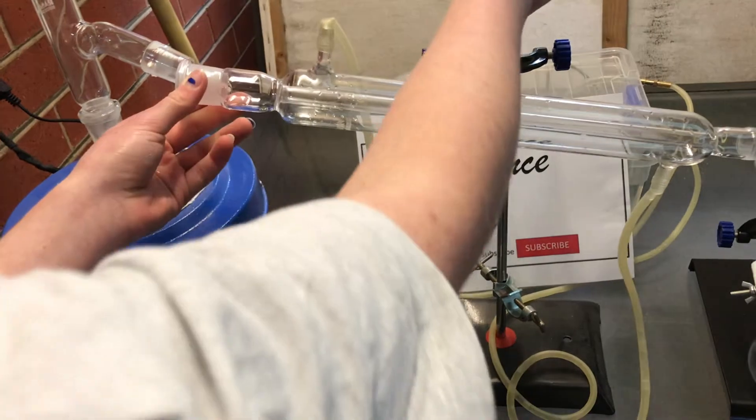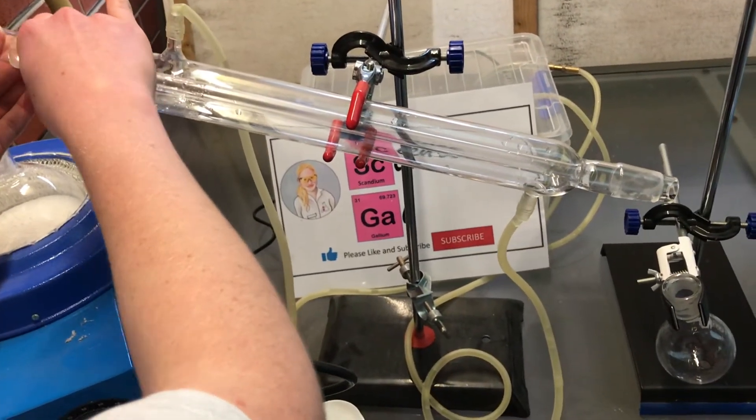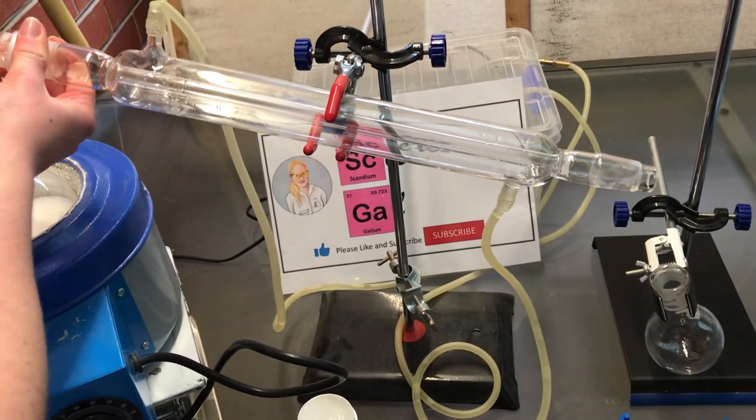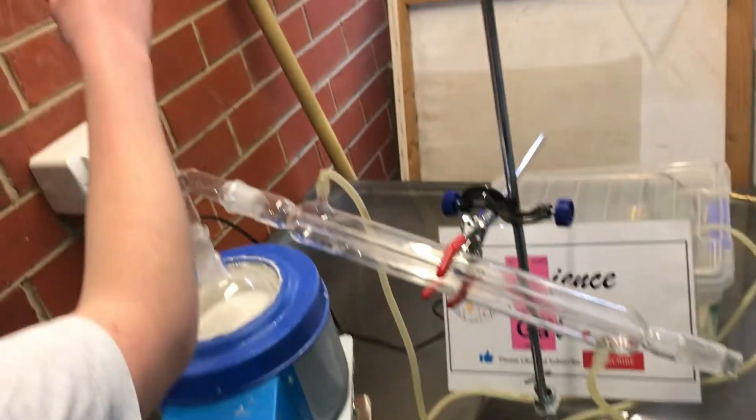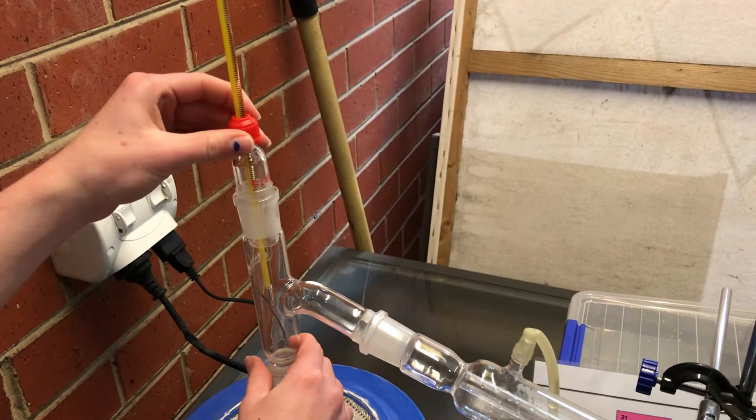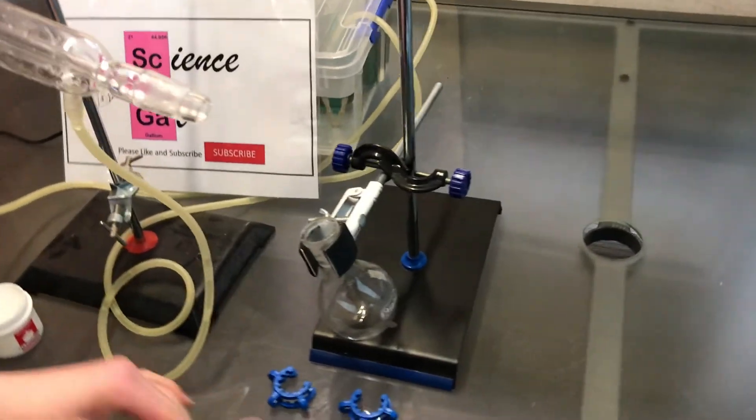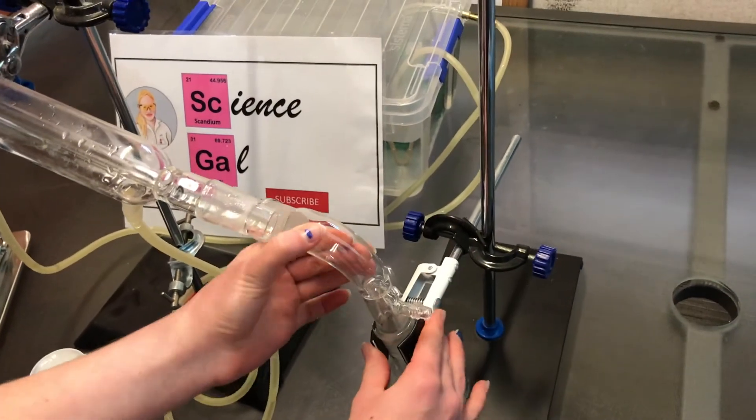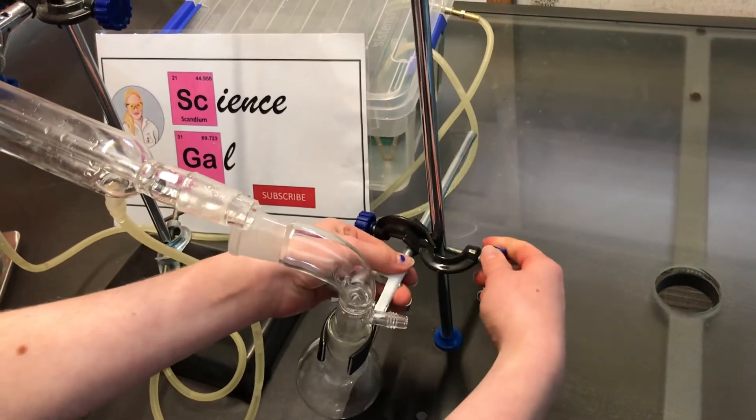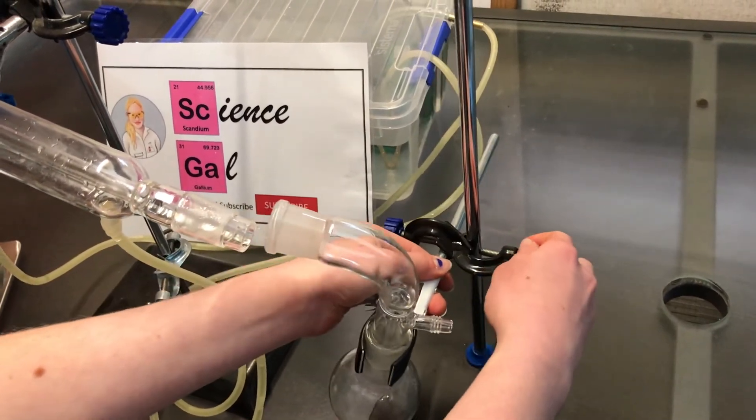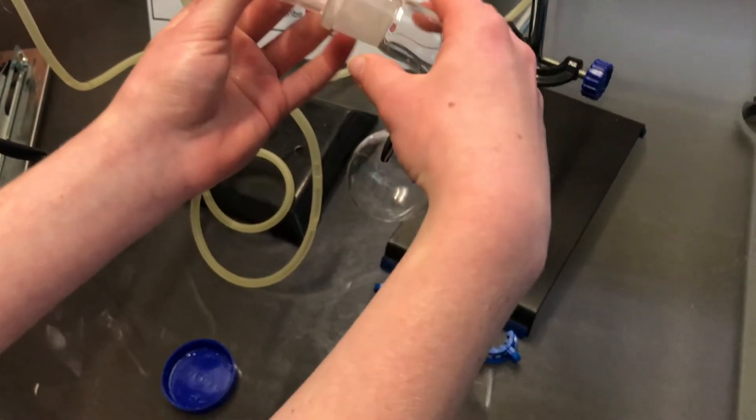I then attached the three-way adapter to the condenser and the thermometer. The vacuum adapter is attached to a 50 milliliter round bottom flask, which is used as the receiving flask. Then I carefully raised the clamp and attached it to the condenser. The whole setup is supported by two retort stands, making sure that the condenser and receiving flask are secured by clamps.